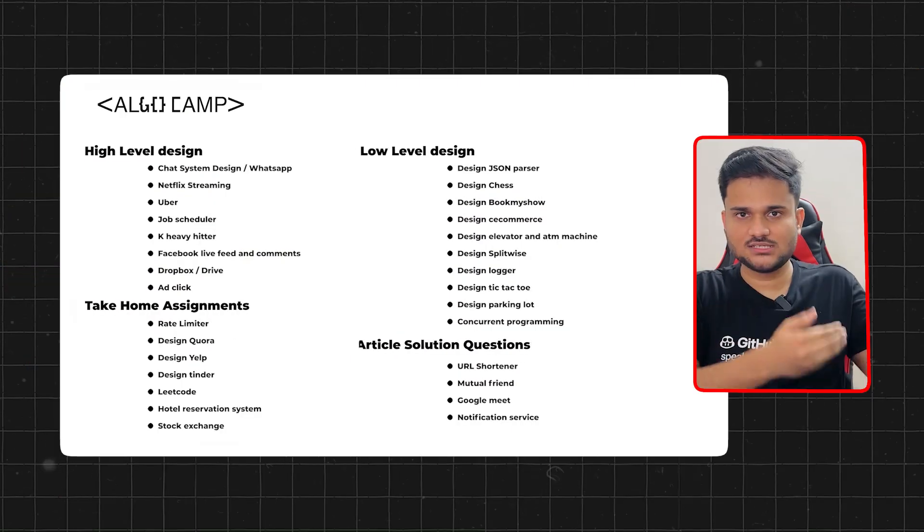After fundamentals, we move to high-level design problem solving with really interesting problems: designing a cab service like Uber, a streaming service like Hotstar or Netflix, something like LeetCode, an ad click aggregator, a URL shortener, and more complex problems like Facebook live feeds and Google Meet. All problems will be listed on screen — you can pause and check them. To avoid spoon-feeding, many problems will be discussed in class while others you'll solve yourself, giving you a fair idea of how a system design interview actually works.